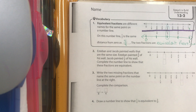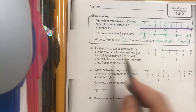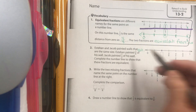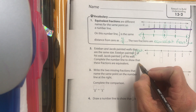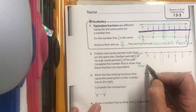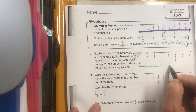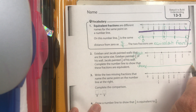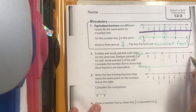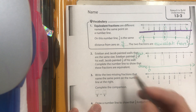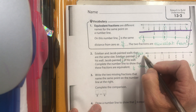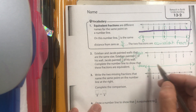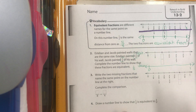Now let's look at the next one — Esteban and Jacob. Esteban painted two-sixths of his wall. Jacob gets a separate number line; we are not going to share number lines. The zero has to line straight down and our one straight down. Jacob painted one-third, so his number line will be in thirds and Esteban's is in sixths.